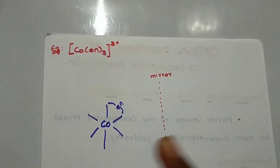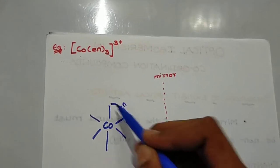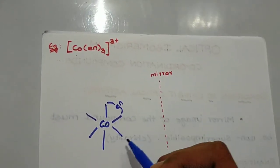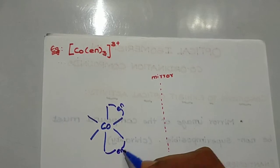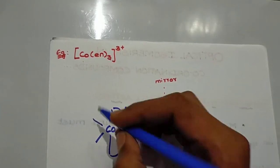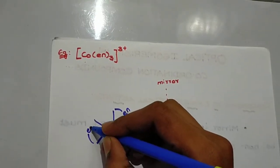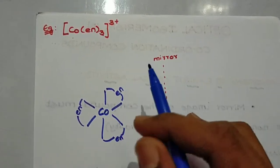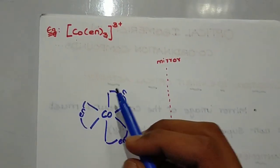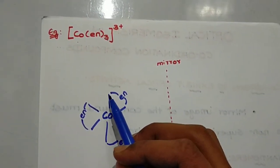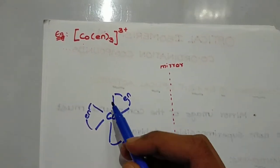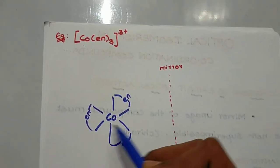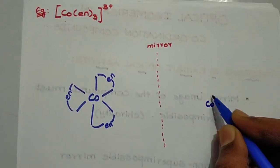Ethylenediamine (ethane-1,2-diamine) has two nitrogen donor atoms — so two donor atoms per ligand. The central metal has three ethylenediamine ligands attached. This gives us the octahedral structure. Now, how do you see this mirror image? That is the structure of the central metal atom.